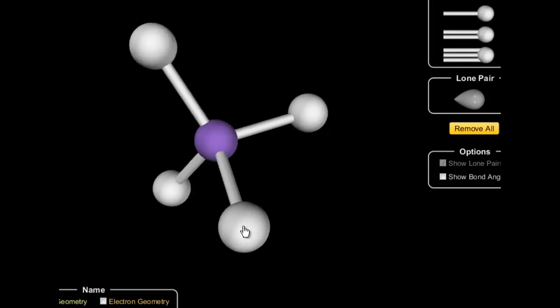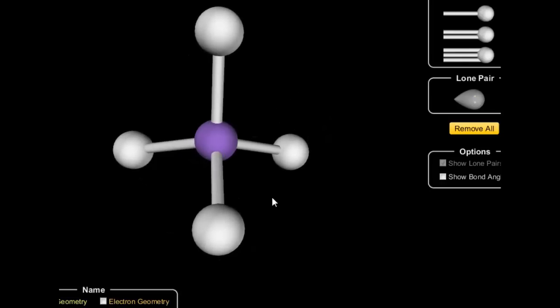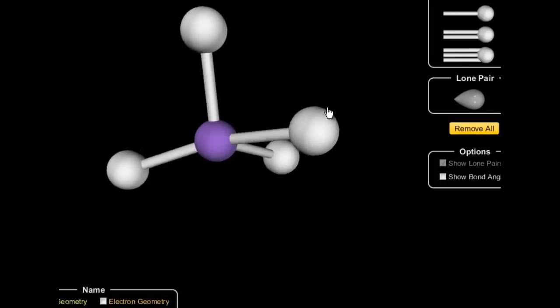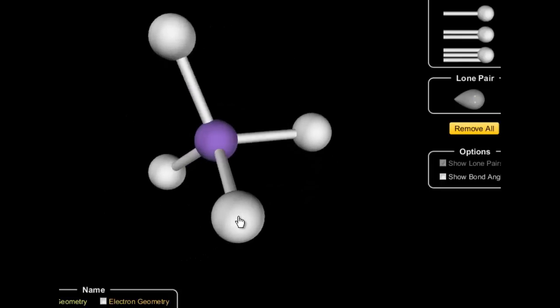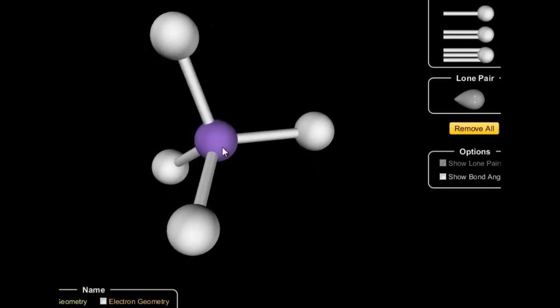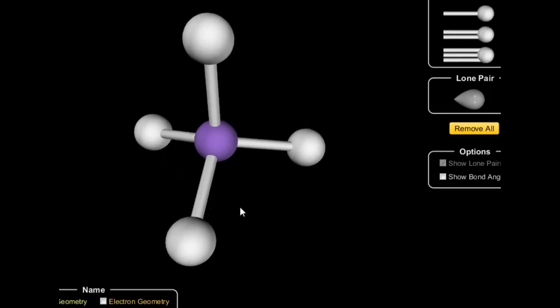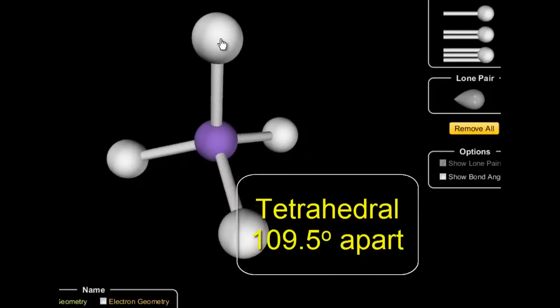Now there were no extra, unshared electrons on that central atom, everybody was happy, and this is what our shape looks like. In the real world, they're not 90 degrees apart, but actually 109.5 degrees apart. They're all equidistant from each other, and this is what we call a tetrahedral shape.